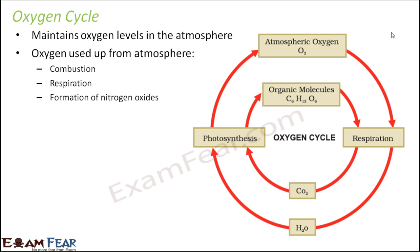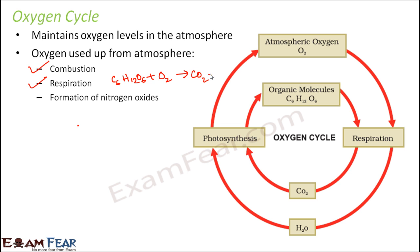First, let us talk about the processes where oxygen gets used up from the atmosphere. The first such process is combustion — any burning takes place only in the presence of oxygen. The second is respiration, which happens in all living organisms, both plants and animals, where oxygen is taken up to oxidize food, generally in the form of glucose.